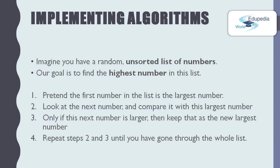Here is a simple algorithm example. Imagine you have a random, unsorted list of numbers and the goal is to find the highest number. You must look at every number in the list, but each number only once. Step 1: pretend the first number is the largest. Step 2: look at the next number and compare it with the current largest. Step 3: only if this number is larger, keep it as the new largest. Step 4: repeat steps 2 and 3 until you have gone through the whole list. At the end, you will find the highest number.